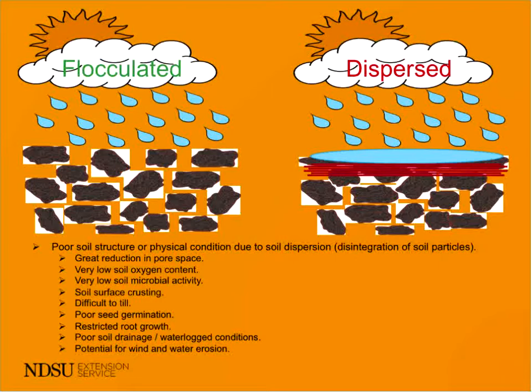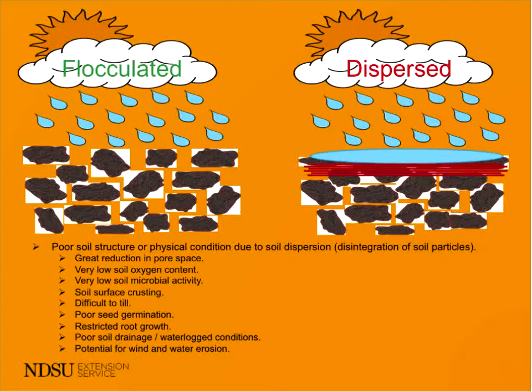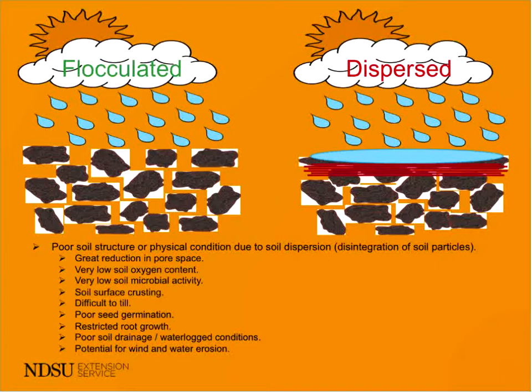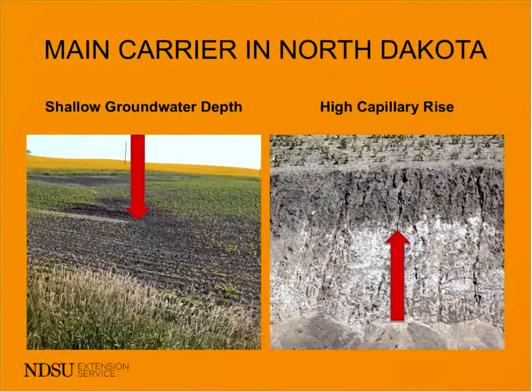Once soil dispersion happens, it destroys soil structure — a more severe problem than excessive salts alone. It greatly reduces soil pore space, leading to low soil oxygen and low microbial activity. There would be surface crusting, difficulty tilling, poor germination, restricted root growth. These soils would remain saturated with water and have a great potential for wind and water erosion.